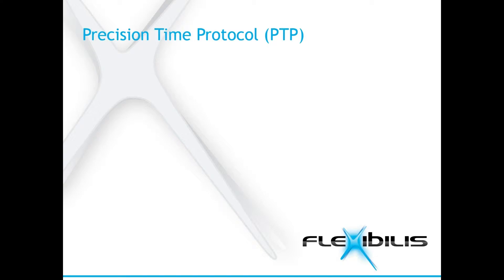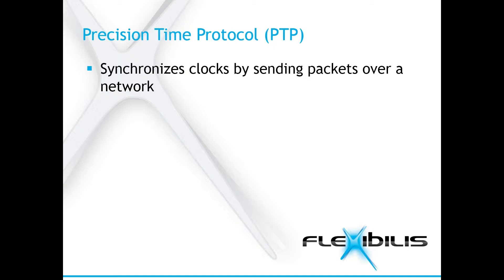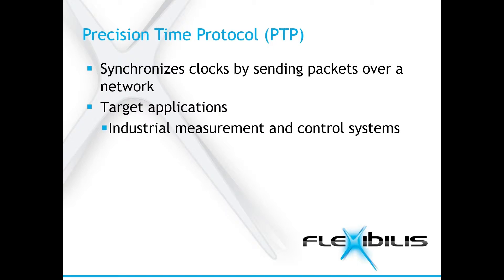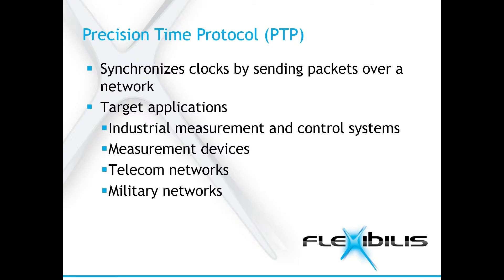PTP synchronizes clocks by sending packets over a network. The other clocks are automatically synchronized to the most accurate clock in the network. Note that PTP just synchronizes the device clocks by using the network. It does not make the packet delivery in the network any more accurate, precise or faster. The target applications include, for example, industrial measurement and control systems, measurement devices, telecom networks, and military networks.